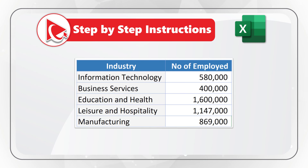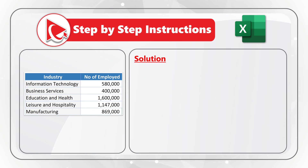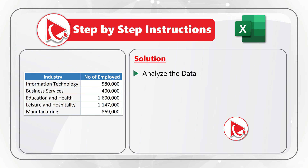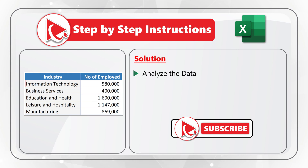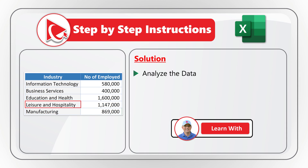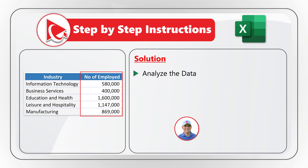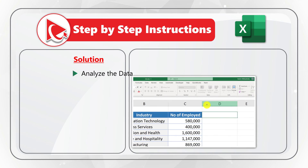Now let me share step-by-step instructions on how to solve this challenge on the test. The first step is to analyze the data — we have industries including information technology, business services, education and health, leisure and hospitality, and manufacturing, with the number of employed people in each. To calculate the percentage of employed people using advanced conditional formatting with data bars, we need to create a new column and format the title to match the other titles in the data table.